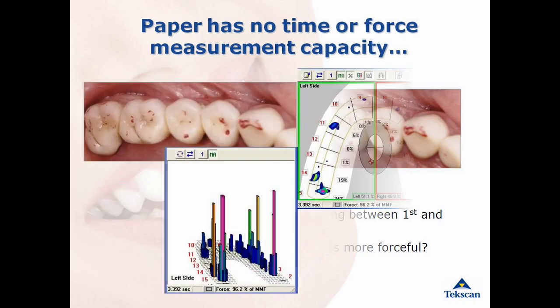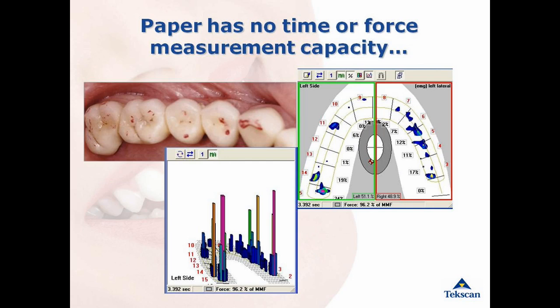The T-Scan provides quantifiable data to add meaning to the paper marks. With articulating paper, all you see is surface area. You need the T-Scan to see the timing and force of occlusal contacts. Both the 2D and 3D software images of this case show you that the small scratchy mark is the highest force, and the larger marks have a lower force.